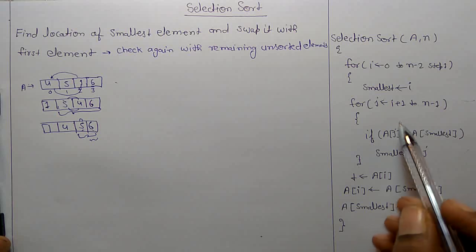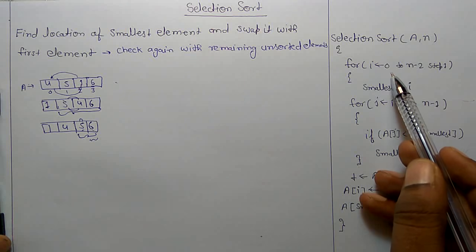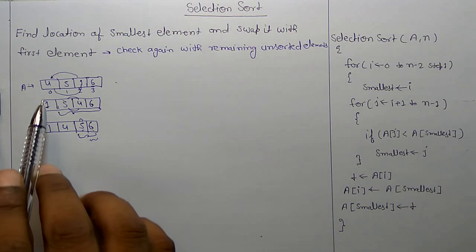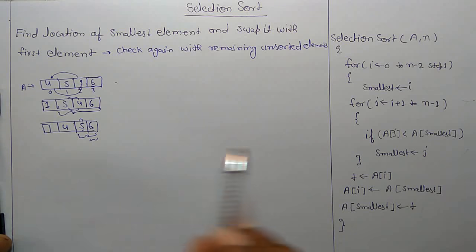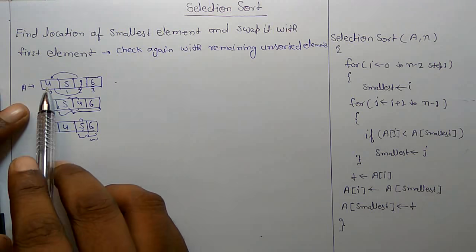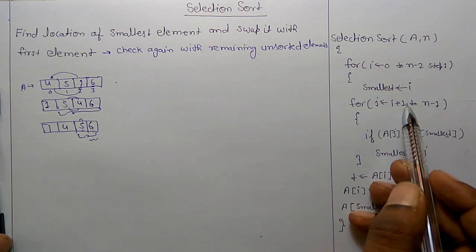This is the algorithm for selection sort, where A is the array and n is the number of elements. We have to run it from 0 to n minus 2, where we have assumed the index starts from 0 to n minus 1. First, assume the first element is the smallest value.